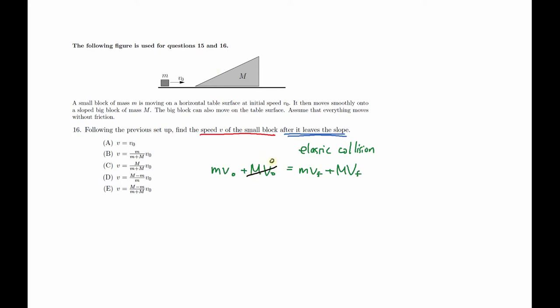We already know that the big block did not move initially, so that goes to zero. Now after the collision, we know that the direction of our small block is changing to the negative side, so I can illustrate that by writing down the equation V equals negative VI.